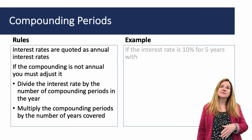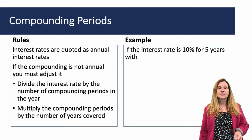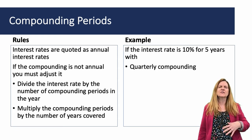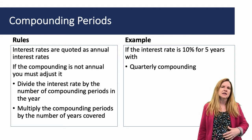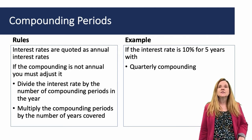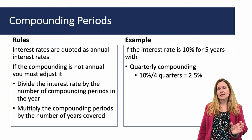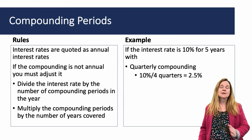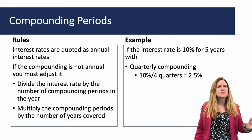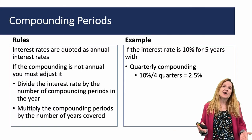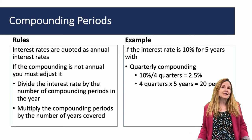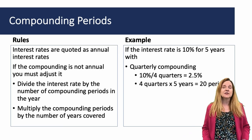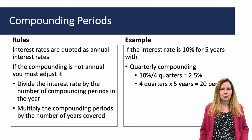We also need to multiply the compounding periods by the number of years. For example, if the interest rate is 10% for five years with quarterly compounding, you take the 10% interest rate and divide it by four because there are four quarters in a year — the interest rate per quarter would be 2.5%. And because it's five years, you take four quarters multiplied by five to get 20 periods.